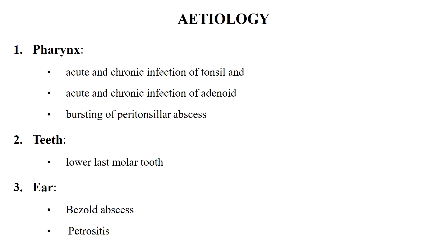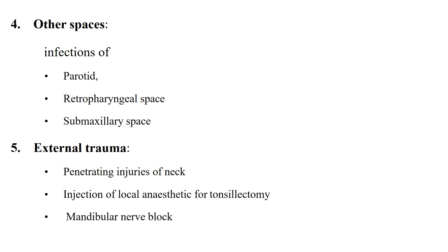Infection of the parapharyngeal space can occur from the pharynx, including acute and chronic infections of the tonsils and adenoids, along with bursting of a peritonsillar abscess. It can also come from teeth — dental infection usually from the lower last molar tooth. From the ear, it can be extension of a mastoid abscess and petrositis.